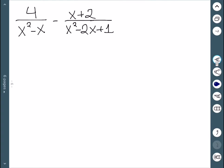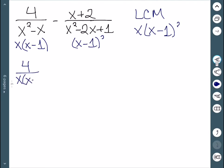Next we'll do a subtraction. The first denominator has x in common, leaving x times (x minus 1). The second factors into (x minus 1) squared. So the LCM is x(x minus 1) squared. My first fraction has x minus 1, but only one of them, so I need to add x minus 1 to the top and bottom.